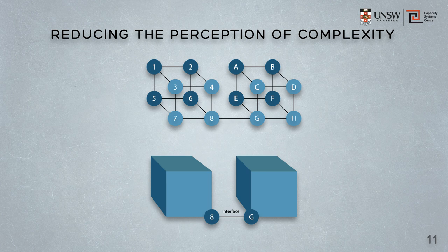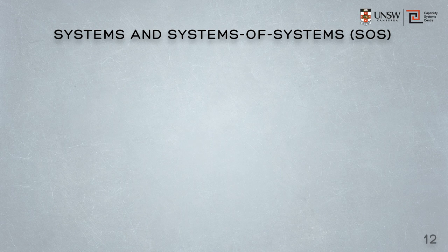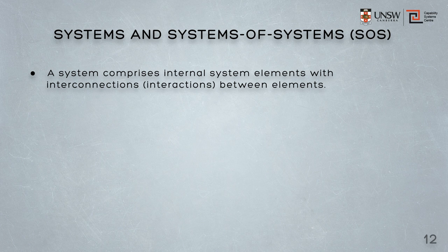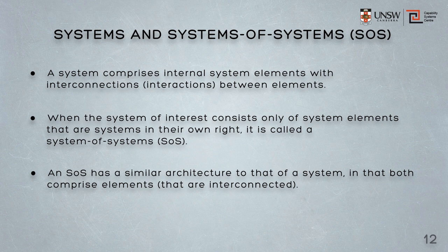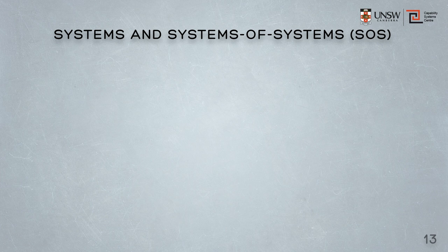Now, the reason we're interested in graphs is that they're good ways to illustrate systems. That's because a system comprises internal system elements that are interconnected. We can therefore model a system as a graph with the system elements as the vertices and their interfaces as the links. When the system of interest consists of system elements that are systems in their own right, it's called a system of systems. Now, a system of systems is a similar architecture to that of a system, in that both comprise elements that are interconnected.